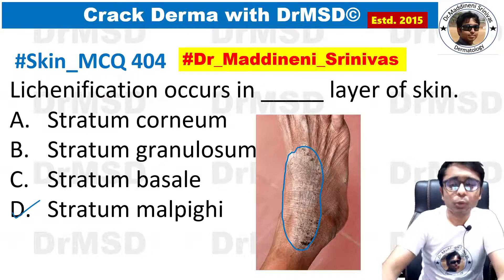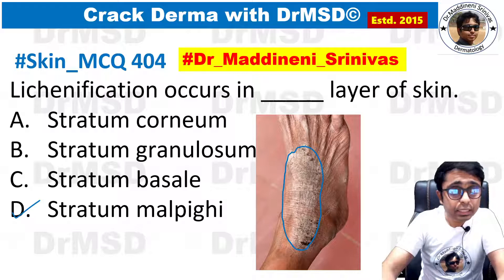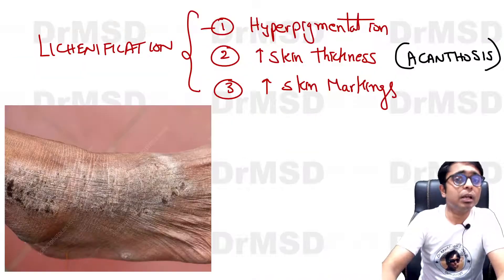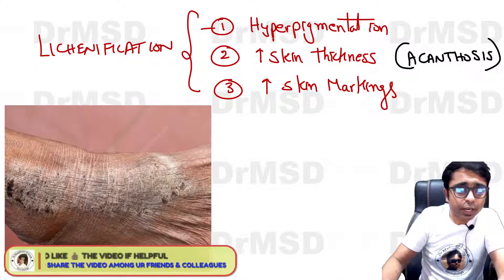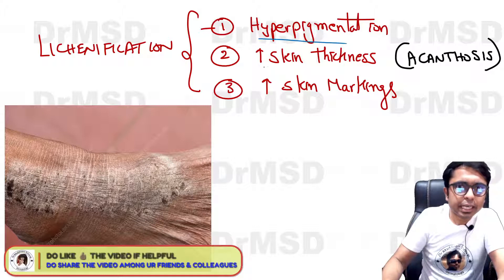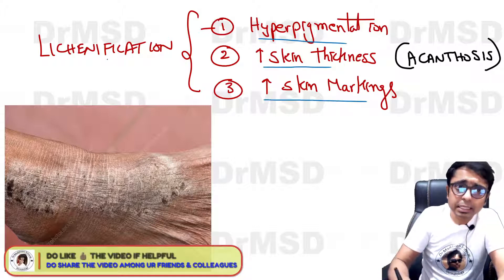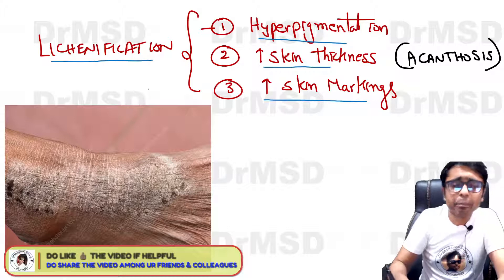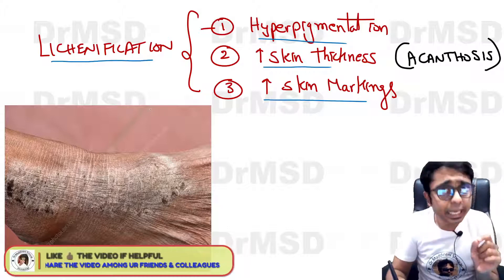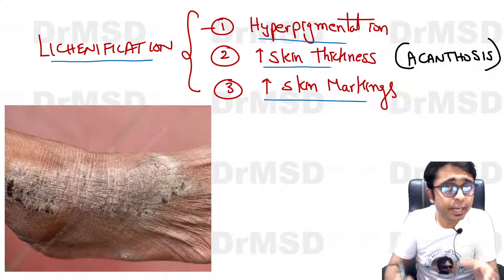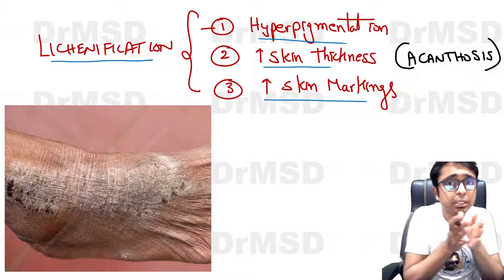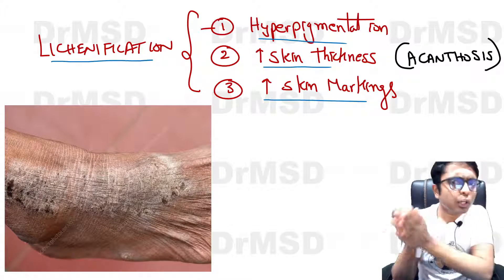All three features put together — hyperpigmentation, increased skin thickness, and increased skin markings — is what we call lichenification. Also, remember that eczema is divided into acute eczema, subacute eczema, and chronic eczema.